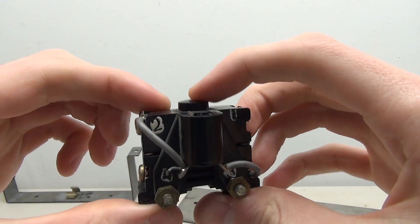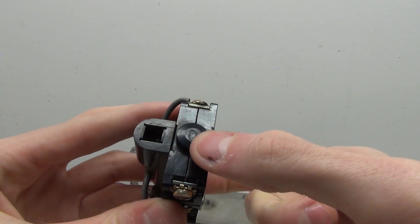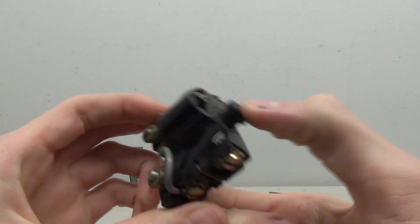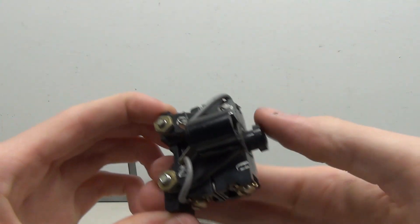Here we have the actual contact itself. We've got this little button here, and when you push down on it, it completes a circuit. There's a normally closed switch and a normally open switch.